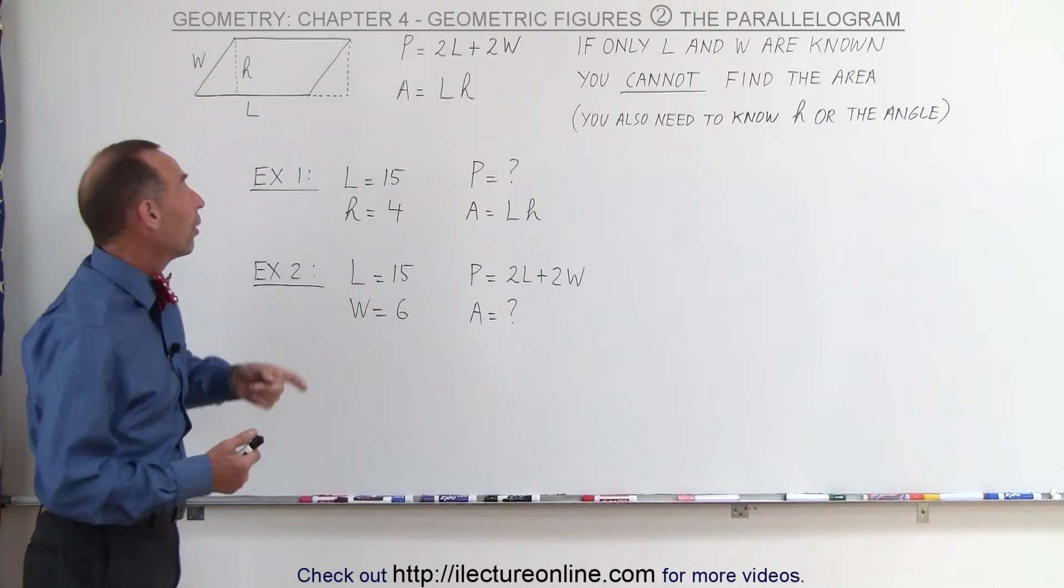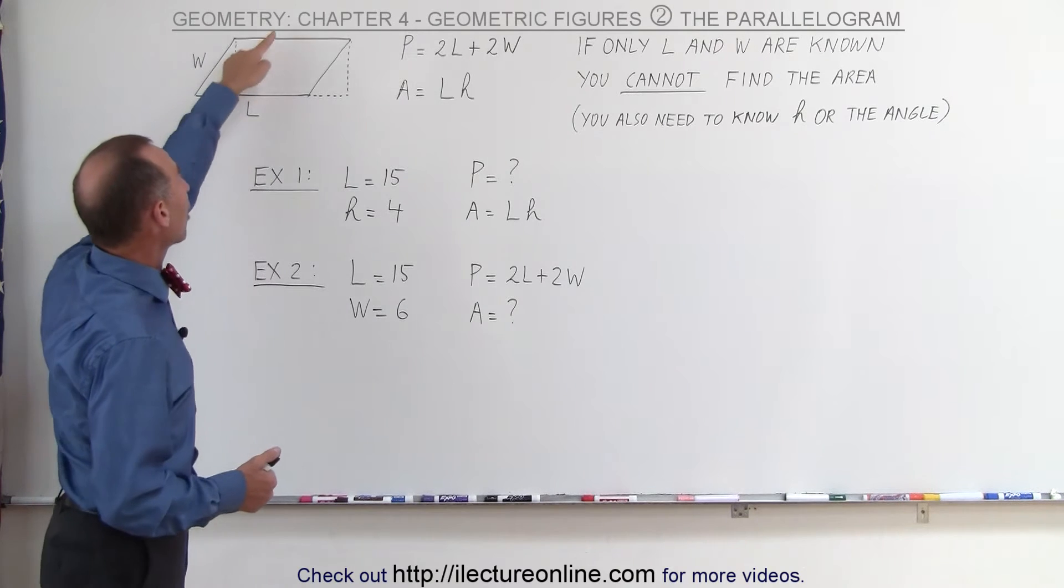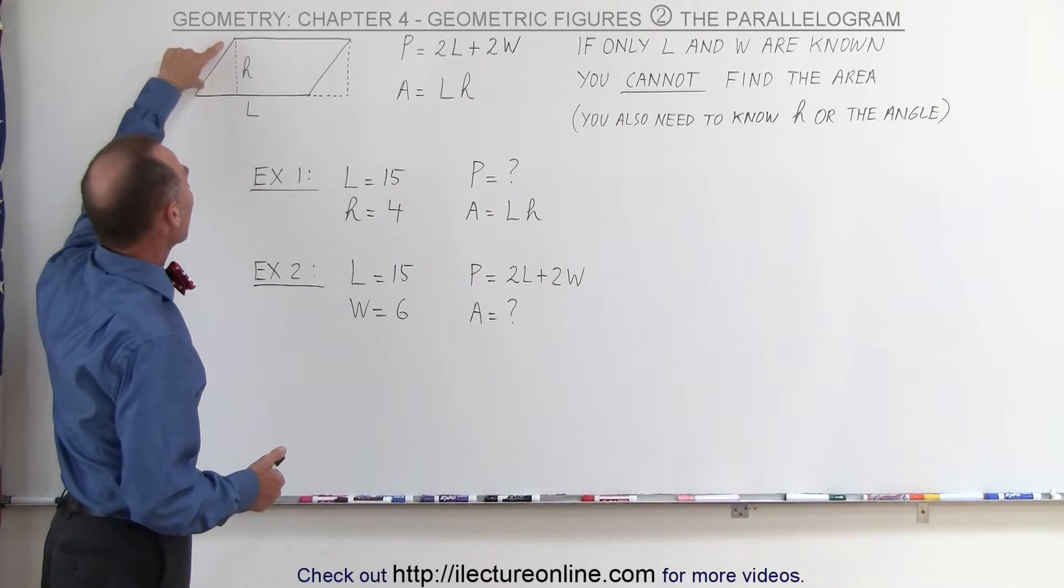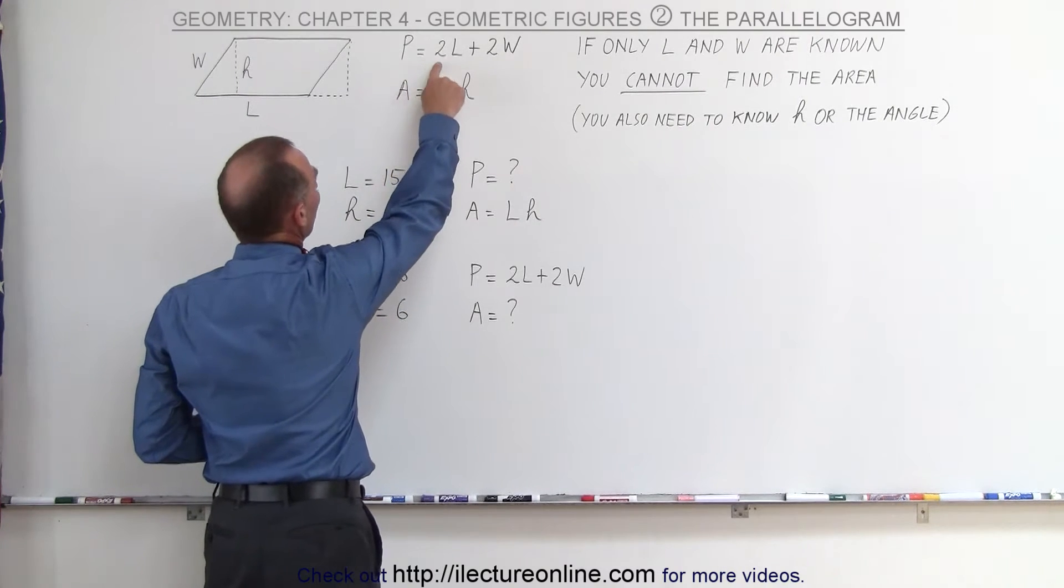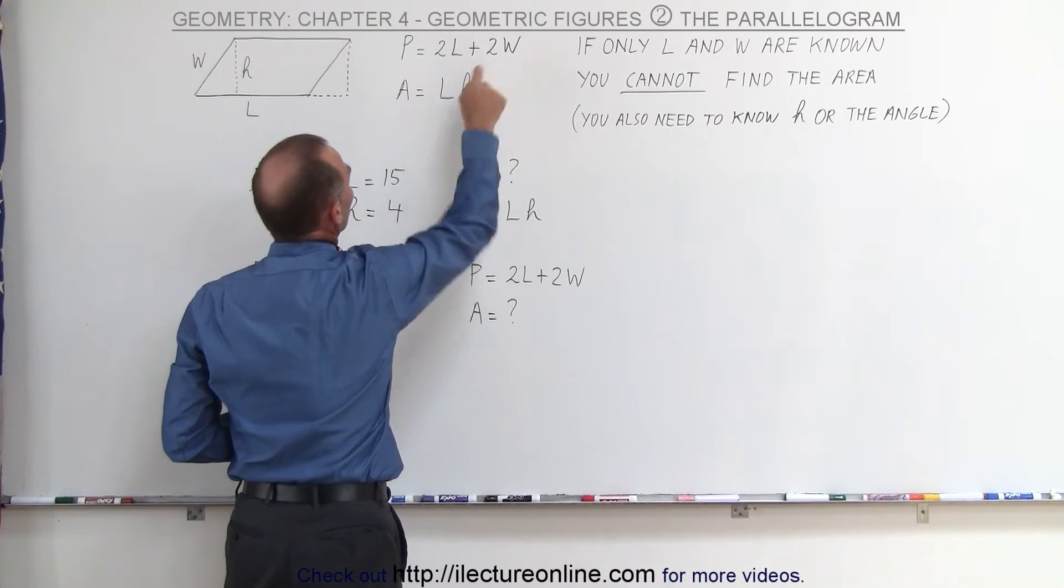Now, to find the perimeter of a parallelogram, we have the long sides, let's call them L, and we have the shorter sides, let's call them W. And then the perimeter, just like for rectangle, will be twice the long side plus twice the short side.